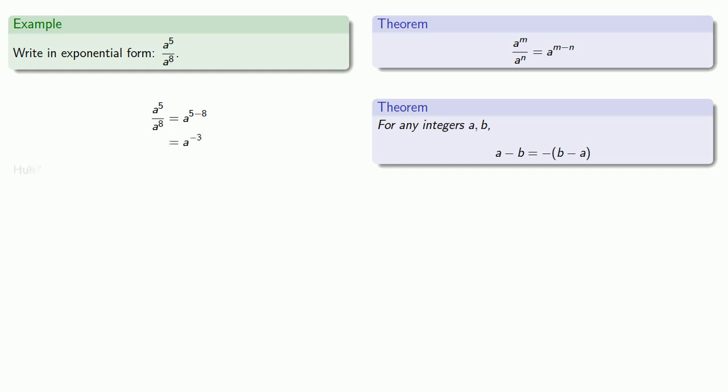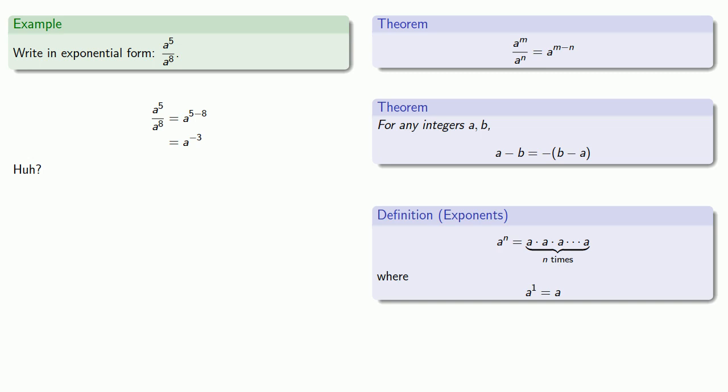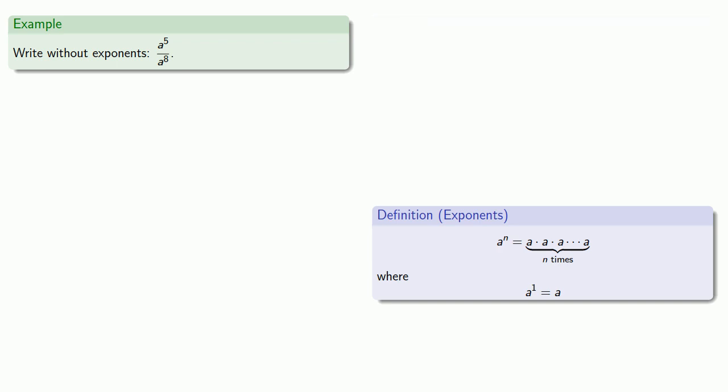And what? Weren't exponents supposed to tell us how many times something appeared? So how can a appear negative three times? To answer this question, let's rethink it. This time we'll ditch the theorem and focus only on the actual definition. So let's try and rewrite this without exponents.